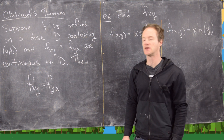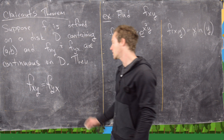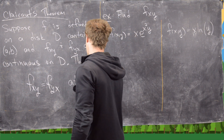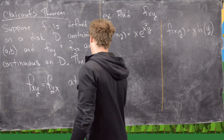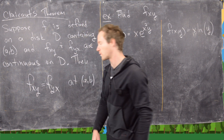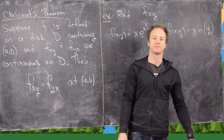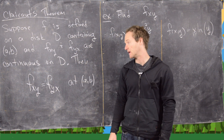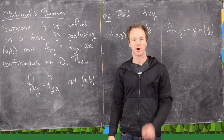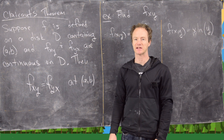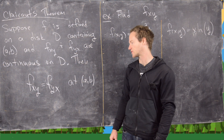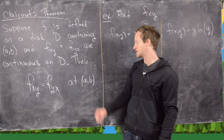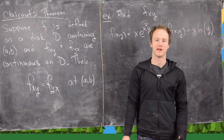In other words, the two mixed partial derivatives are the same regardless of what order you take those partial derivatives in. So you can take the partial with respect to x first or the partial with respect to y first, and this is true at the point (a, b).